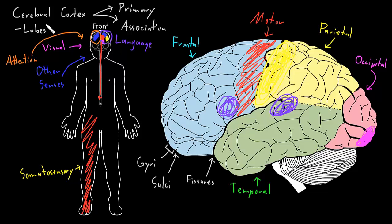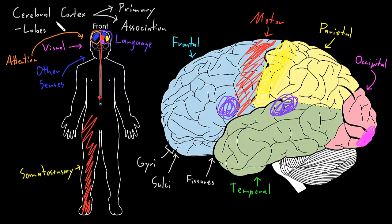There's a lot more to discuss regarding the structure and function of the cerebral cortex, and how its areas connect with other parts of the nervous system — for example, the motor cortices work with the basal ganglia, deep subcortical cerebral structures, and the cerebellum to perform many motor functions. But this gives a brief overview of the cerebral cortex's structure and some of its key functions.